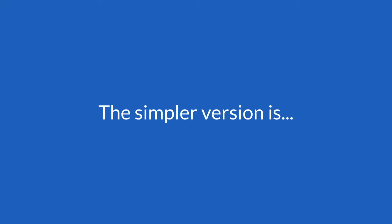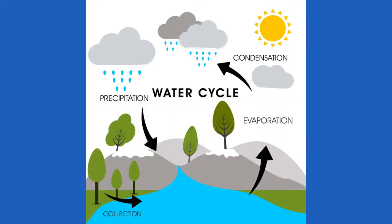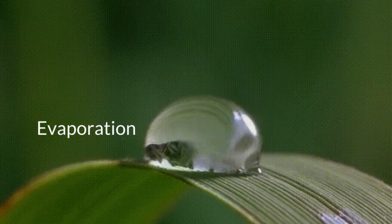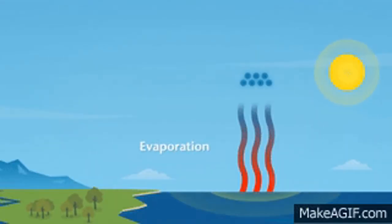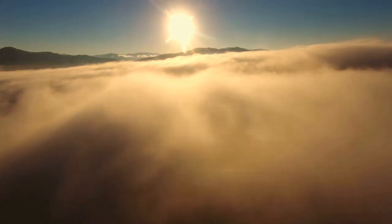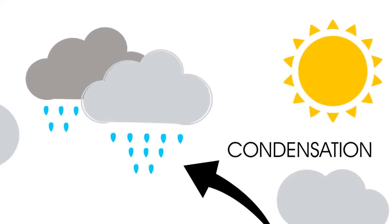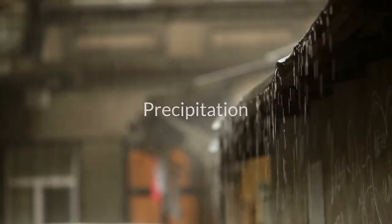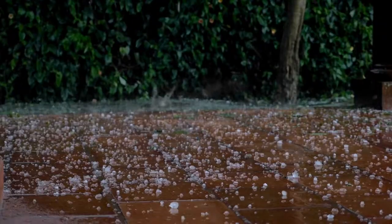The simpler version of the water cycle is evaporation, condensation, and precipitation. Evaporation is a process in which water changes into vapor and enters the atmosphere. The clouds in the atmosphere contain the water vapor. When it cools, it condenses, and gravity pulls the water to the earth as precipitation, which can be rain, sleet, hail, or snow.